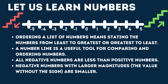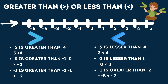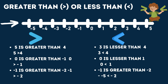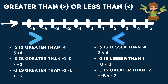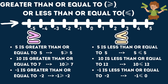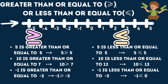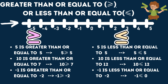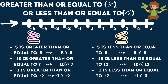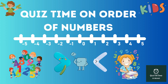Now let us learn comparison of numbers. If any number is greater than another, we represent it with the greater than symbol. For example, three is lesser than four. If any number is equal to another, we represent it with the equal to symbol, or sometimes the greater than or equal to symbol, or the less than or equal to symbol. For example, 5 is greater than or equal to 5.